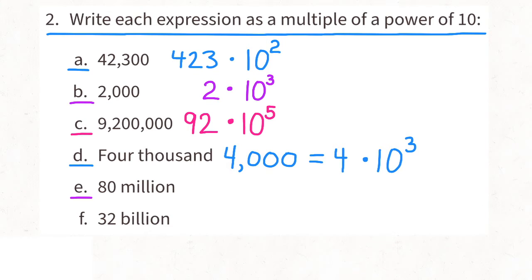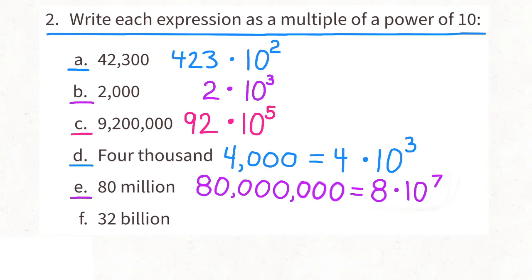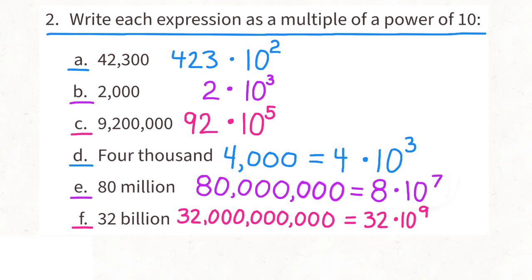E: 80 million — that's an 80 followed by six zeros, or an eight followed by seven zeros. The seven zeros tell me the value is 10 million times greater than eight. So we can write 8 times 10 to the seventh power. F: 32 billion — that's a three and a two followed by nine zeros. The nine zeros tell me the value is a billion times greater than 32. So we can write 32 times 10 to the power of 9.